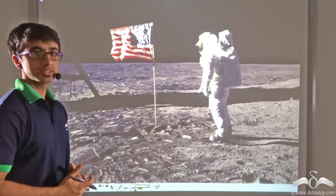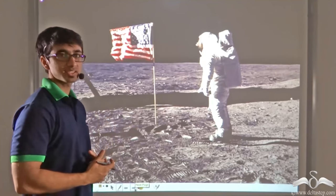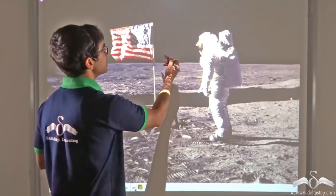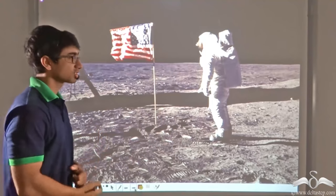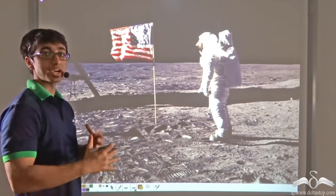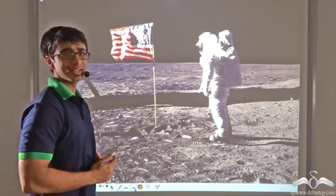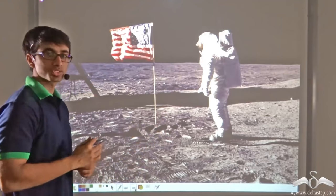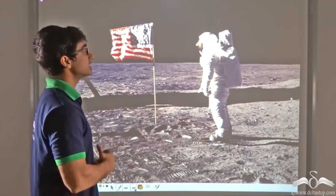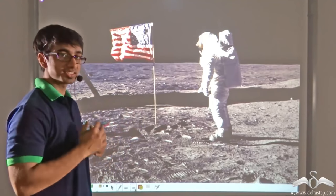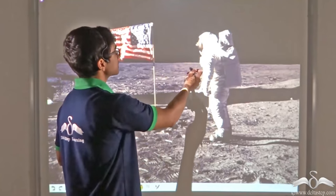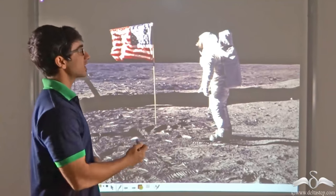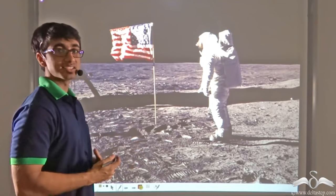Now you must be wondering that when you see movies dealing with outer space or astronauts walking on the Moon, why the sky appears black. This is because the Moon and outer space have no atmosphere — there is complete vacuum and no medium particles. So when sunlight falls there, there is no scattering and as a result no color reaches the astronaut's eyes. It is due to this reason that an astronaut sees the sky around him as completely black, and this is also why movies depict the color of the sky in outer space as black.